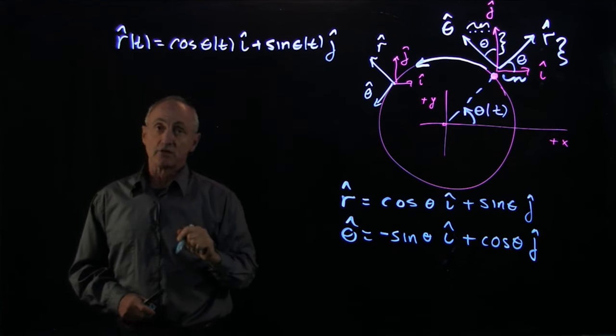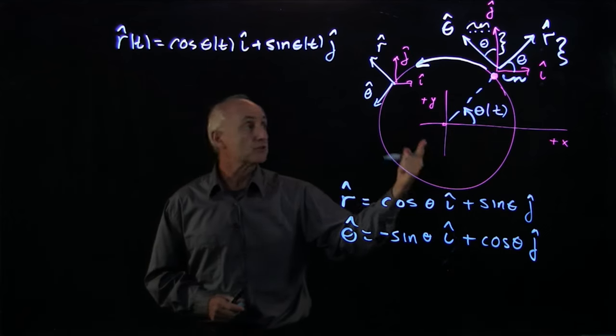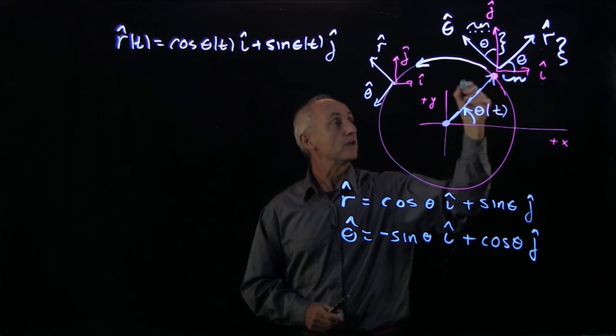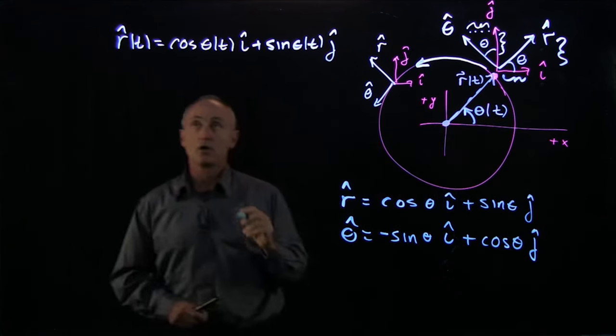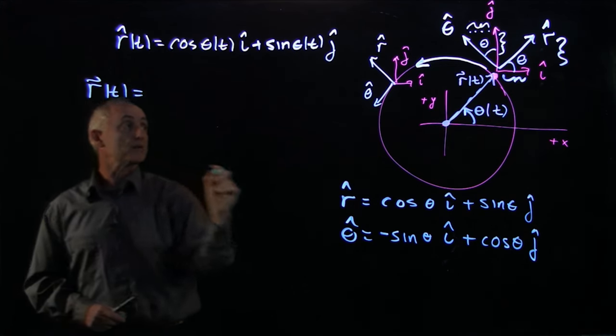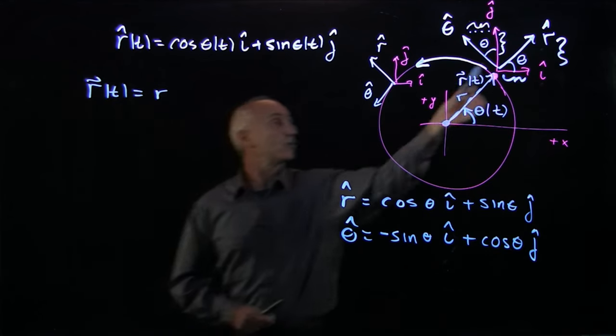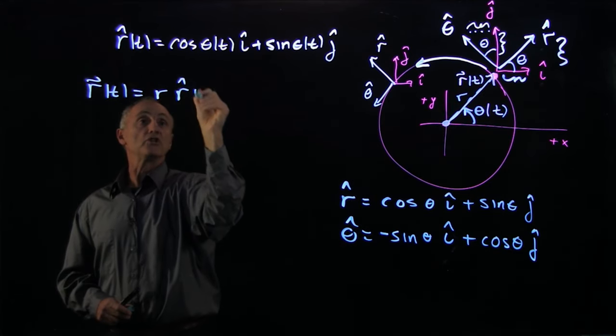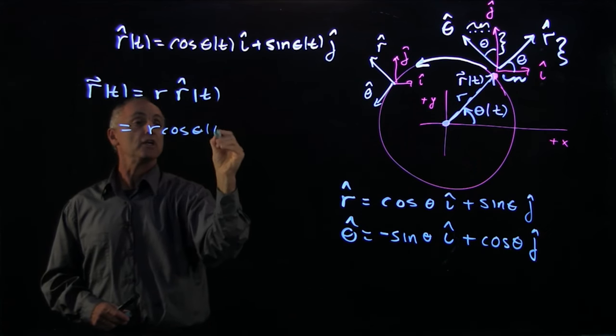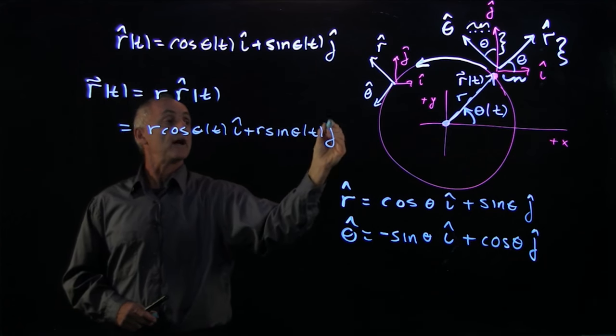Now, the significance of that is our first important vector in kinematics is the position vector. The position vector is a vector that goes from the origin to where the object is. We'll call that r of t. So this position vector, r of t, can be expressed as a length, r, and its direction is in the r hat direction, which is a function of time. So we have r cosine theta of t i hat plus r sine theta of t j hat.